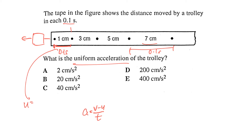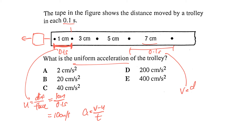To find the initial speed, take the first interval: distance 1 cm divided by time 0.1 seconds gives 10 cm/s. For the final speed, the last interval: 7 cm divided by 0.1 seconds gives 70 cm/s. So v minus u is 70 minus 10, which is 60 cm/s.